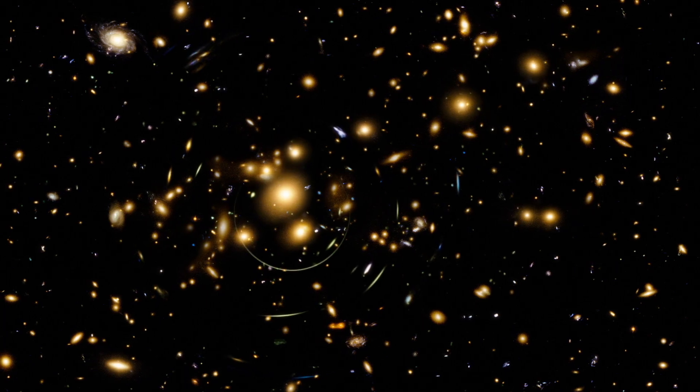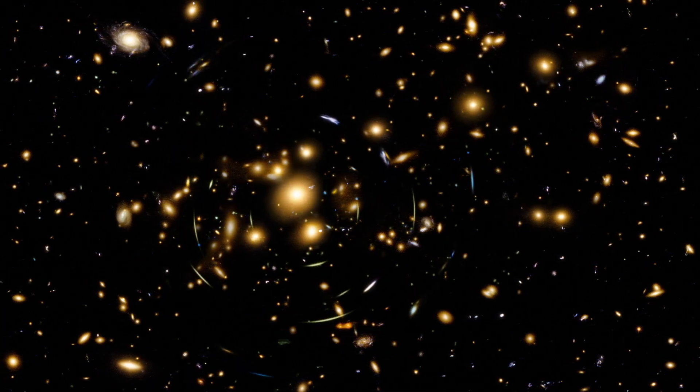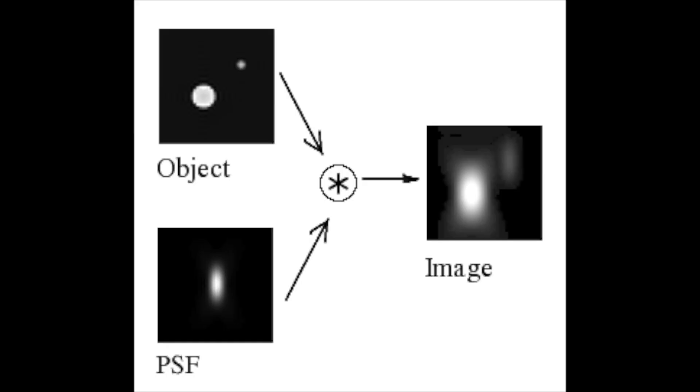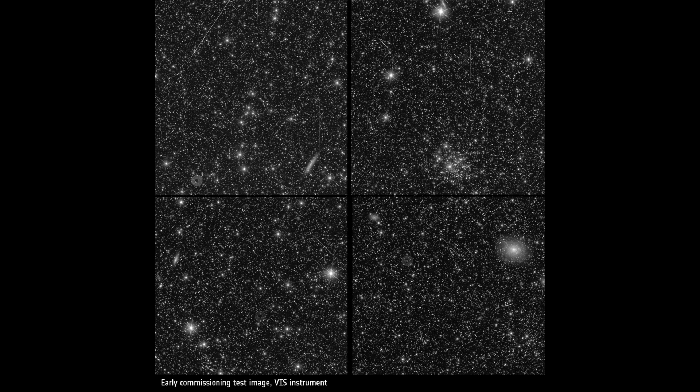Stars are meant to be point sources — they're supposed to look like a single point. But diffraction, optical aberrations, thermal fluctuations, and other detector effects will smear out the point, and we won't be able to get good measurements of galaxy shapes if we don't correct it. So the stars are essentially used to calibrate out these distortions, known as the point spread function, or PSF for short. From the test images, we can see that the PSF of Euclid is already holding up to expectations.